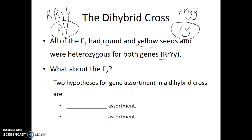The real question is: what about the F2 generation? There were two possible hypotheses. One possibility is that capital alleles will always travel together and lowercase alleles will always travel together — we'd call that dependent assortment. Or it could be that you can get a variety of combinations: capital R with little y, or capital R with capital Y. Just because you got little y doesn't guarantee you'll also get little r — you might get capital R as well. We would call this independent assortment.